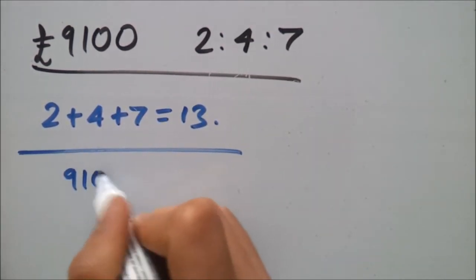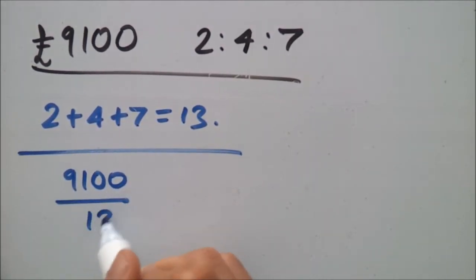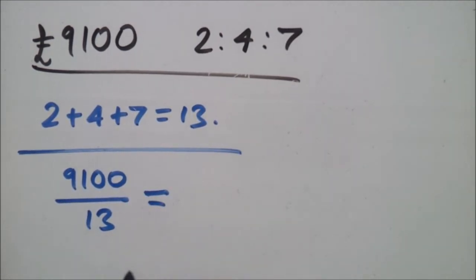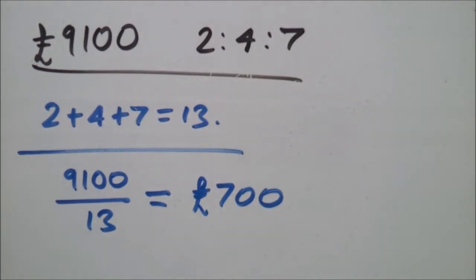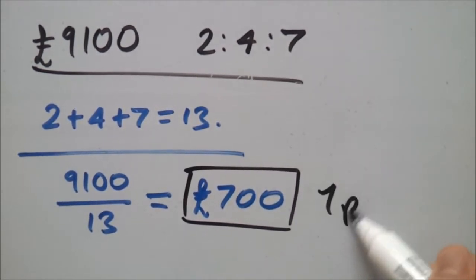So, 9,100 divided by 13 and if you put this in a calculator you should find that it equals 700 pounds. Okay, so now this represents one part.